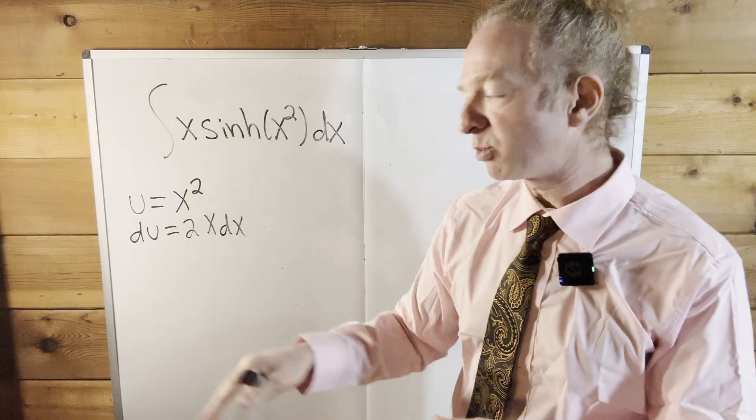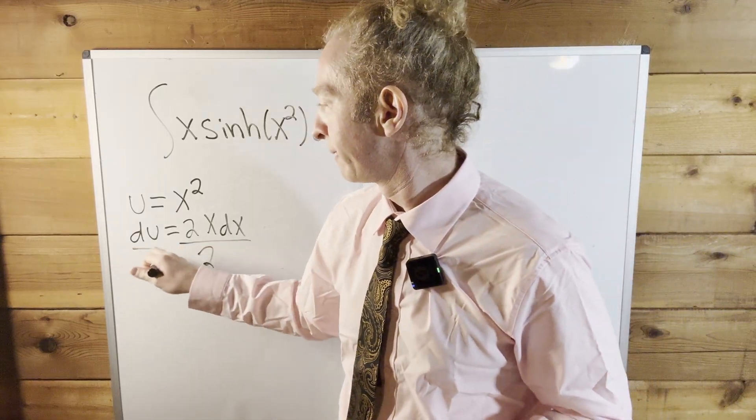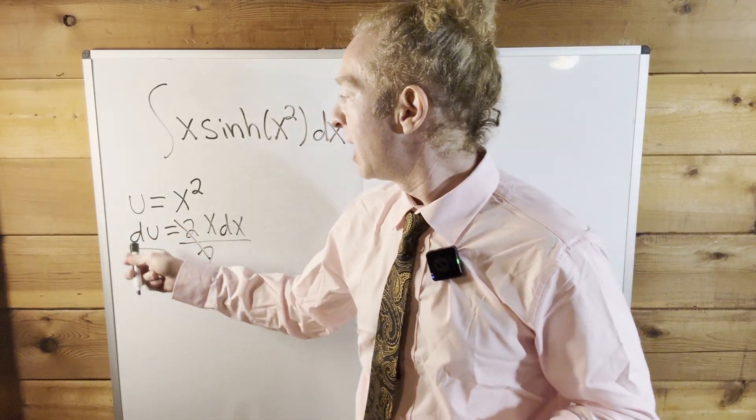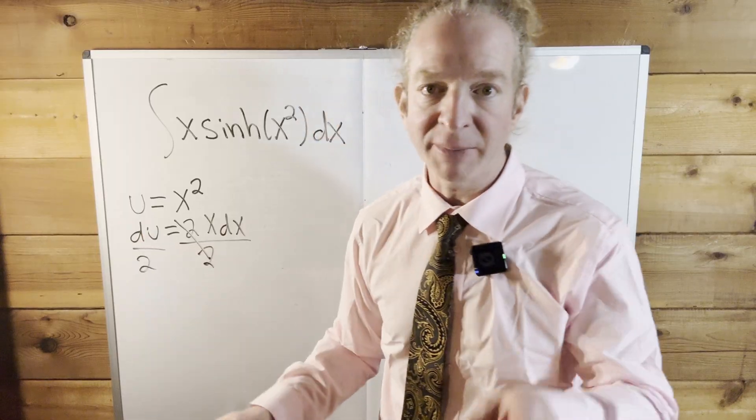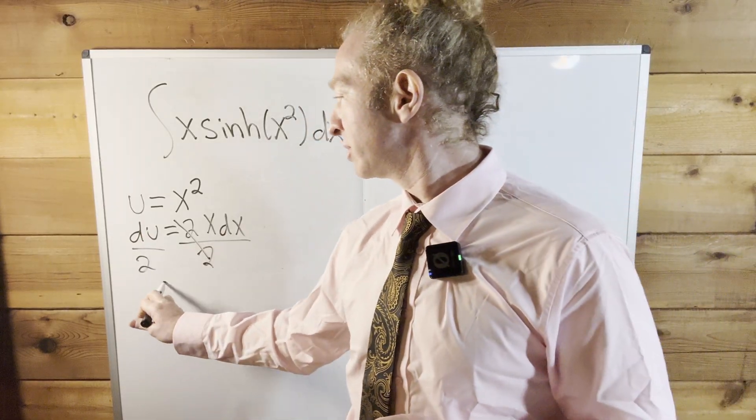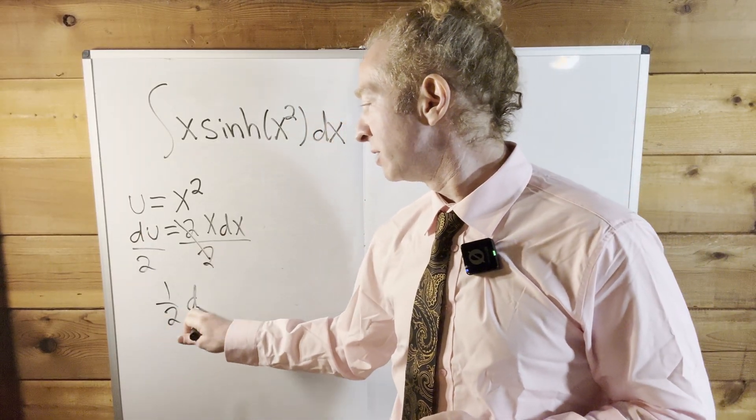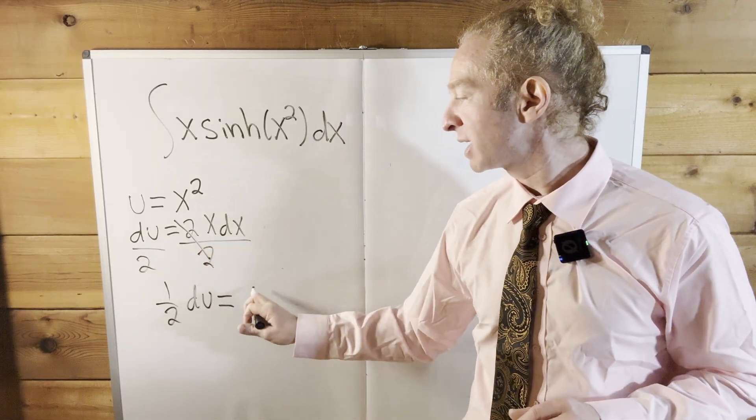So what we'll do now is divide both sides by 2. These cancel. It's du over 2, but I'm going to write that as 1/2 du. So this is 1/2 du equals x dx.